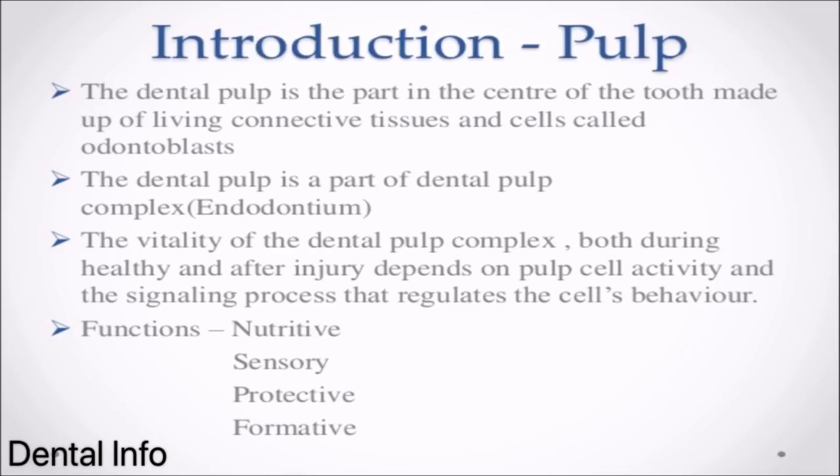Introduction. The dental pulp is the part in the center of the tooth made up of living connective tissues and cells called odontoblasts. The dental pulp is part of the dental pulp complex, the endodontium. The vitality of the dental pulp complex, both during health and after injury, depends on pulp cell activity and the signaling process that regulates cell behavior.